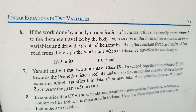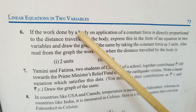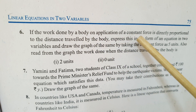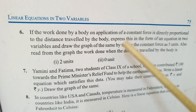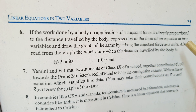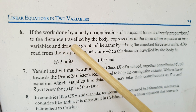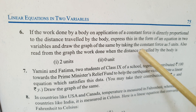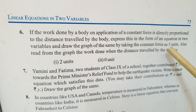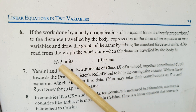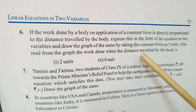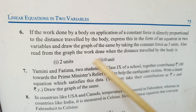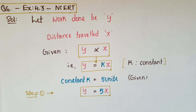This is the sixth problem: if the work done by a body on application of a constant force is directly proportional to the distance traveled by the body, express this in the form of an equation in two variables and draw the graph of the same by taking the constant force as five units. Also read from the graph the work done when the distance traveled by the body is two units and zero units.